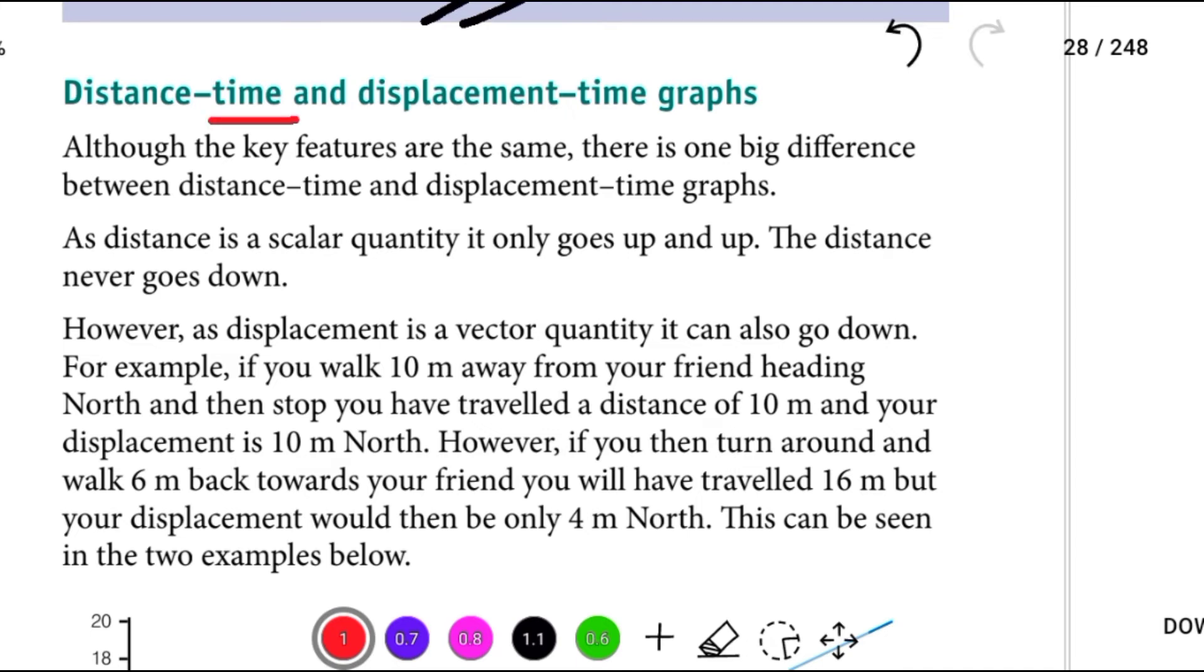Distance-time and displacement-time graphs - the key features are the same. There is one big difference between distance-time and displacement-time graphs. Distance is a scalar quantity. It only goes up and up. The distance never goes down. However, displacement is a vector quantity. It can also go down.